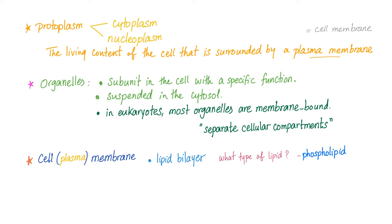They are suspended in the cytosol. In eukaryotes, most organelles are membrane-bound, which are separate cellular compartments. This is a very important point: cell membrane or plasma membrane is a lipid bilayer. What type of lipid? Phospholipid.